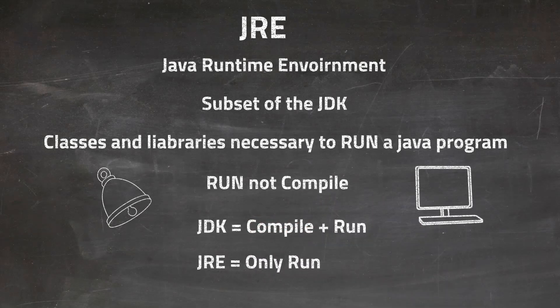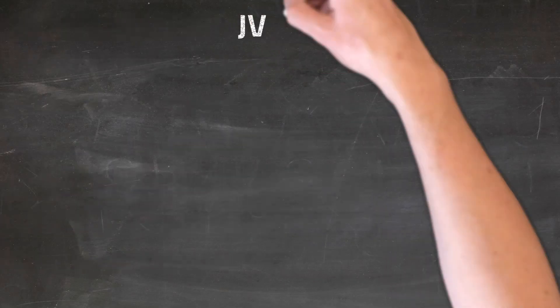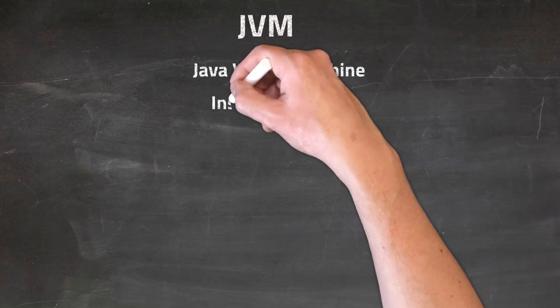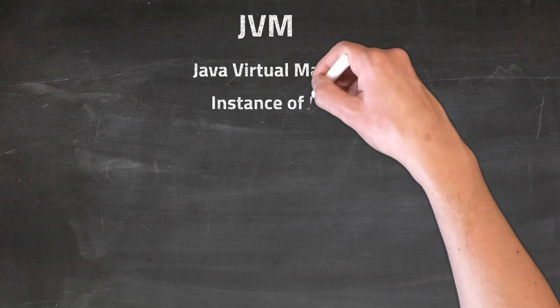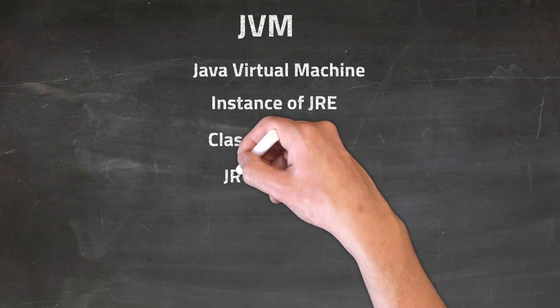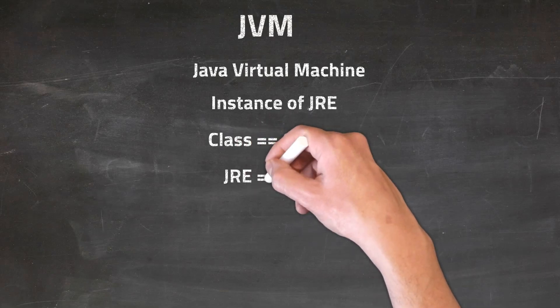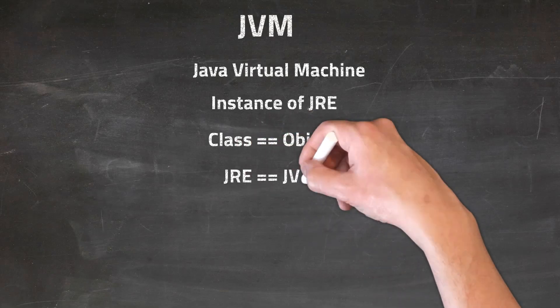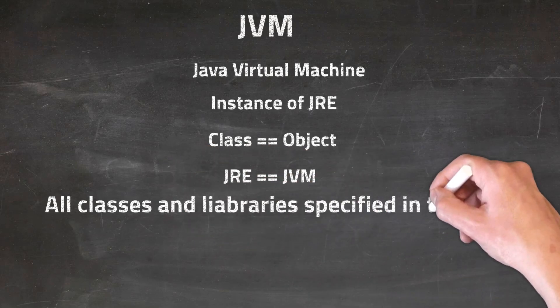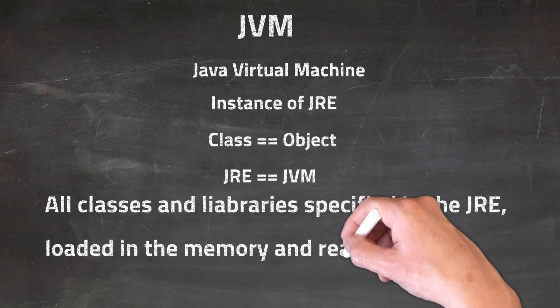Last but not least is the JVM. JVM stands for Java Virtual Machine. It is an instance of the JRE. Like in Java we use a class to instantiate our object, similarly we use a JRE to instantiate a JVM. So basically, it's like all the classes and libraries specified in the JRE, loaded in the memory and ready to run the code that we have written.